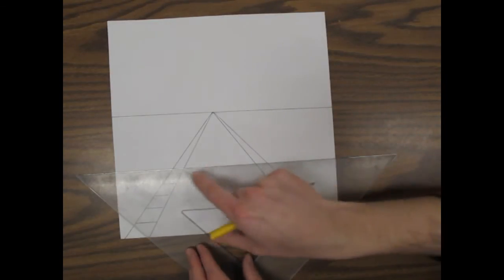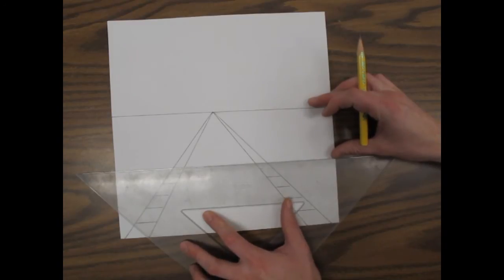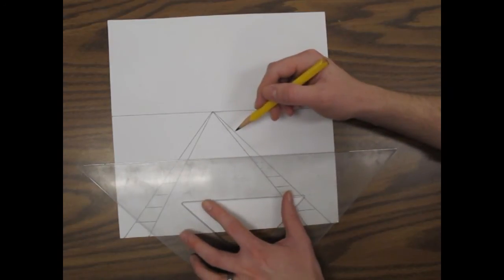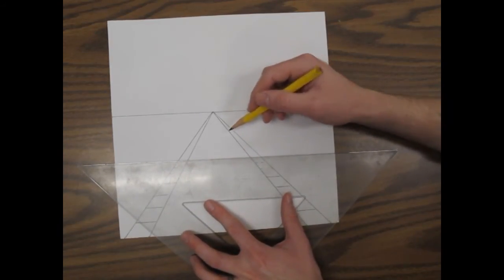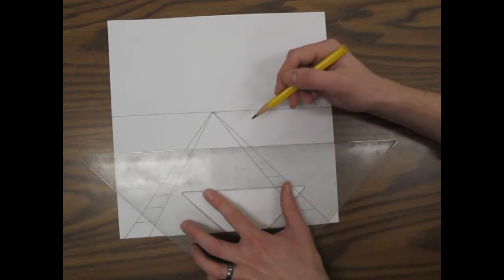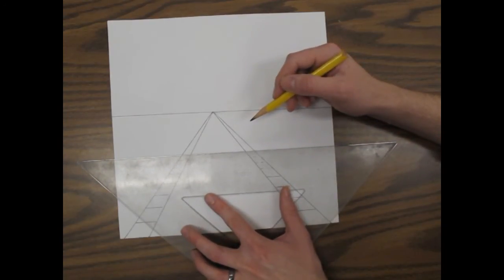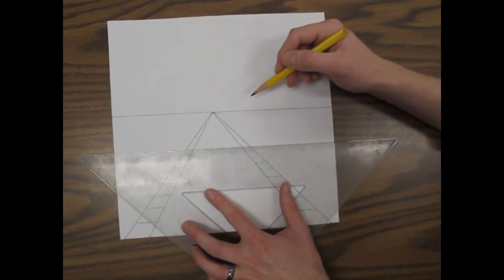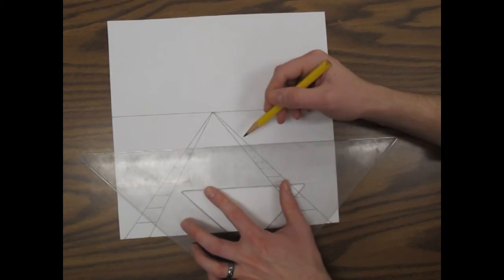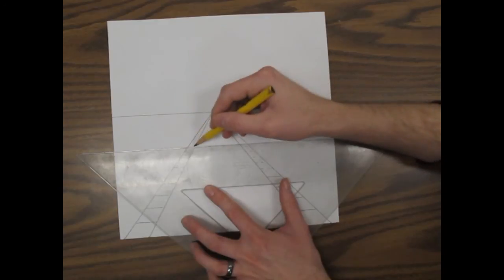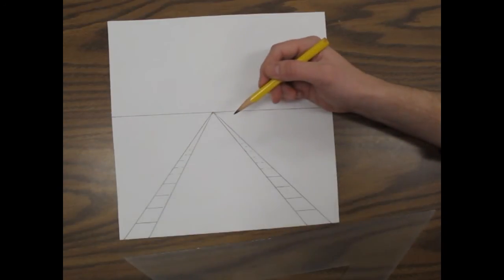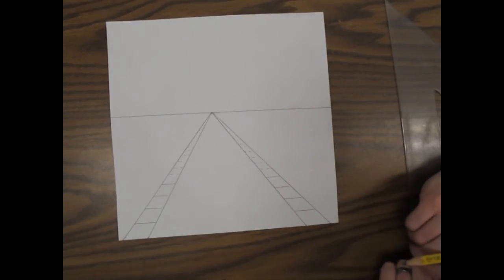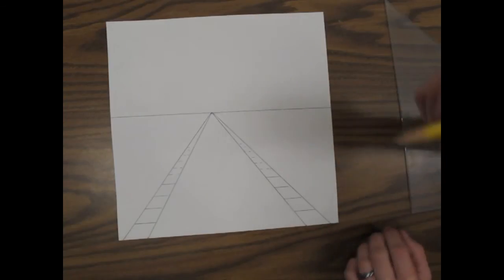Again, I'm always checking to make sure I have those parallel lines. And eventually, I'm just going to stop putting lines in. Maybe do one more. And that's it. I'm going to stop right there. Because as it goes further and further away, you just can't see those lines. So I've got my sidewalk done.